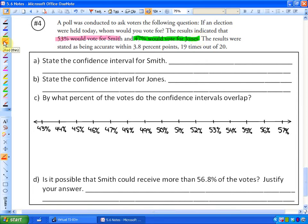So Smith, we know that his mean is 53%. This is Smith. And it's plus or minus 3.8 percentage points. That is the margin of error. So if I add 3.8 percentage points, I'd end up at 56.8. And if I subtract, so that's plus 3.8 percentage points, if I subtract 3.8 percentage points, I'd be at 49.2.